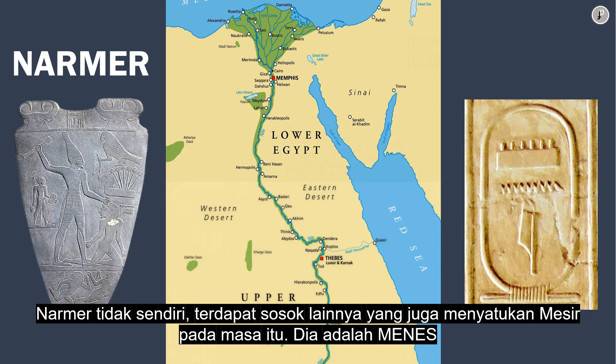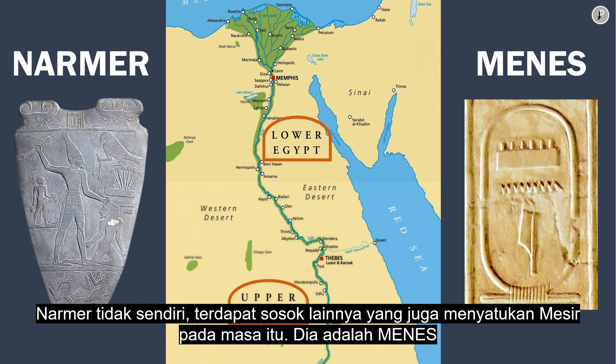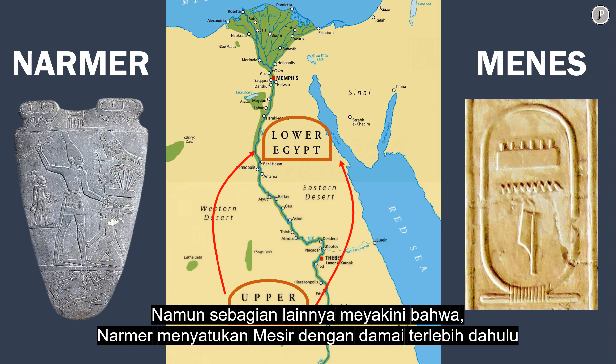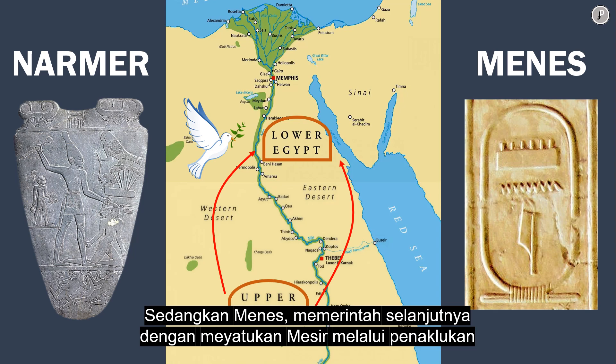Narmer was not alone — there was another figure who also united Egypt at that time: Menes. The majority of historians believed that Narmer and Menes were the same pharaoh. But others believed that Narmer united Egypt peacefully at first, whereas Menes ruled the united Egypt through conquest.